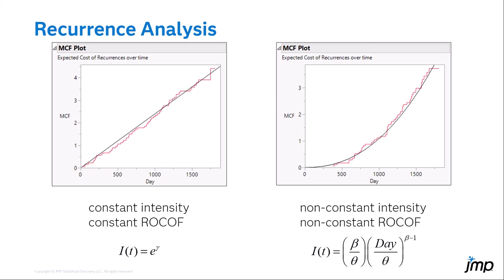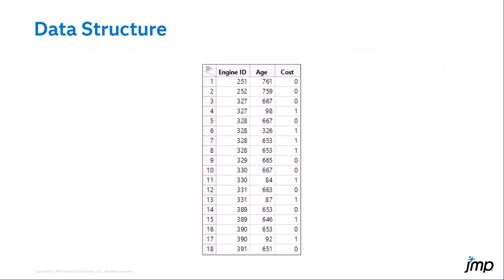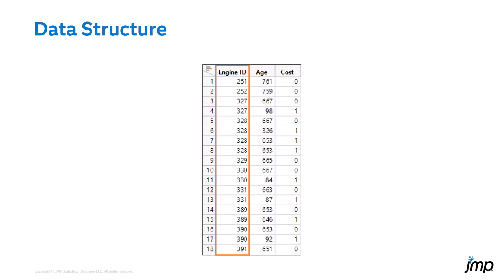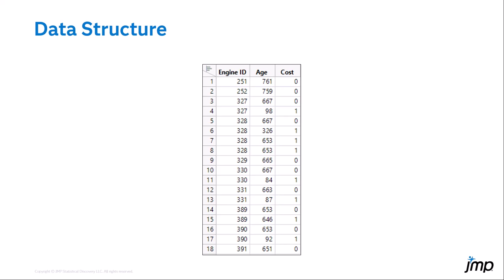Data should be in a table with one row for every observed event. Engine 328, for example, has four rows: three are repair events, and one is a closing row with last observed age. Three columns are required: the label for each system, the unit's age at the time of an event or the time at end of service, and a cost column containing either a one or the cost of the repair, and a zero for the row at the end of service.